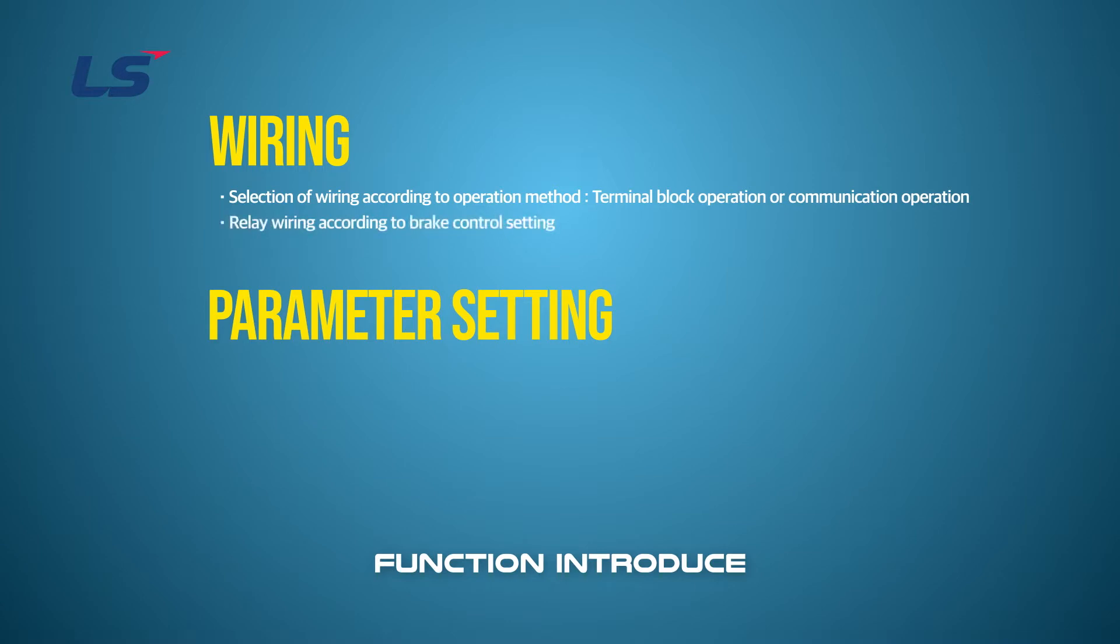In case of using a terminal block, wiring for operation signal, multi-step operation, and brake control signal is required. In case of using communication, install the communication option card and set it using parameters.